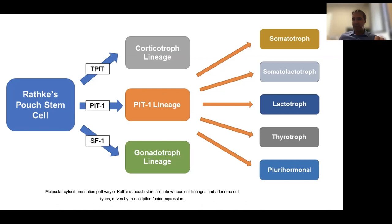Then we have the Pit-1 lineage, which includes somatotroph adenomas (growth hormone adenomas) and lactotroph adenomas (prolactinomas). There is also a mixed or plurihormonal tumor with both growth hormone and prolactin, and a very rare functional tumor called thyrotroph, where tumors produce TSH. The plurihormonal type also includes the thyrotroph type of adenoma. We are learning recently that Pit-1 lineage tumors are the most invasive, especially into the cavernous sinus.